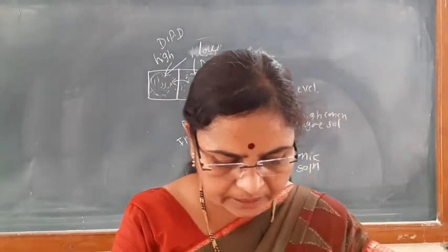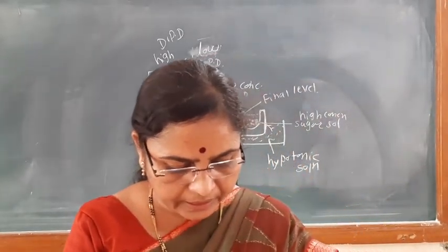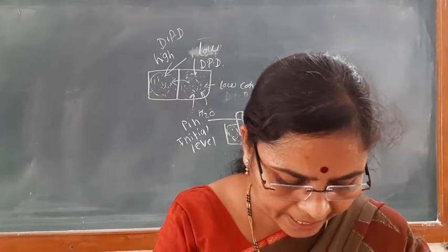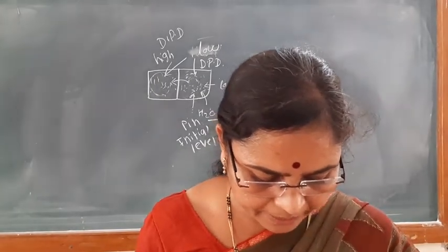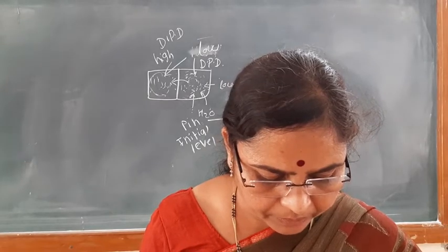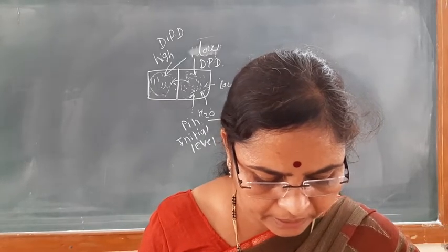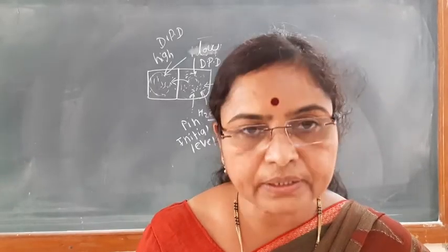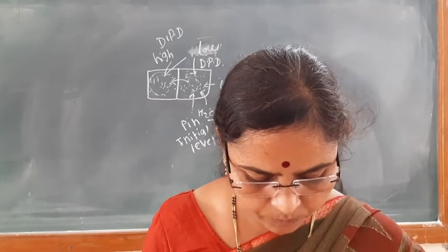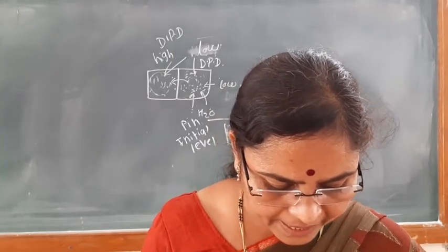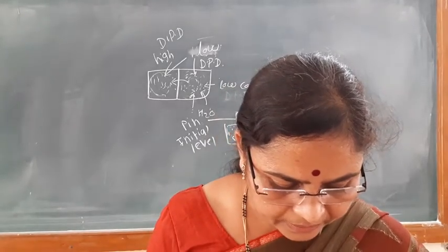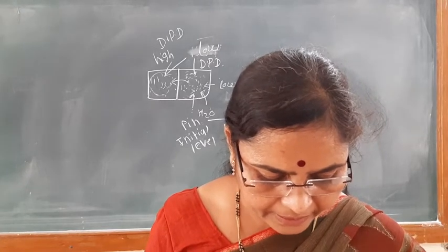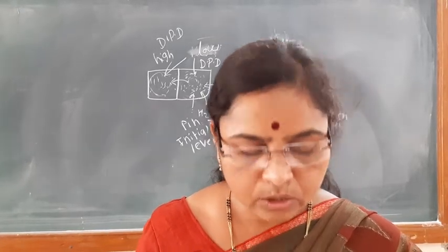In the potato osmoscope diagram, the initial level is marked, and after osmosis the final level rises. Options A, B, C, D are given. C represents the initial level, and D represents the sugar solution level. The final level rises above the initial level due to osmotic entry of water.